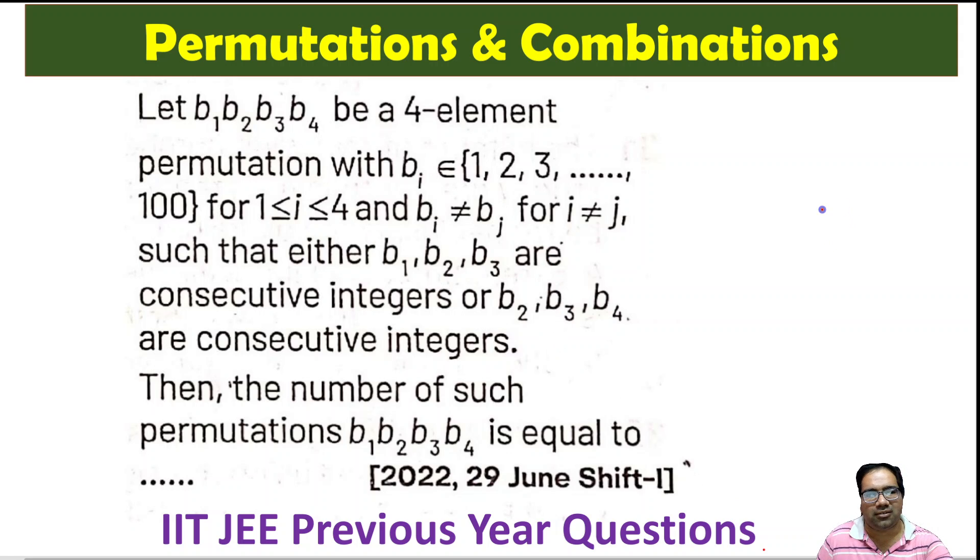That means these numbers can be something like 20, 21, 22 and some 46, or 20, 49, 50, 51. Either last three are consecutive or first three are consecutive. Then how many such sets of numbers are possible? How many permutations of such numbers are actually possible?